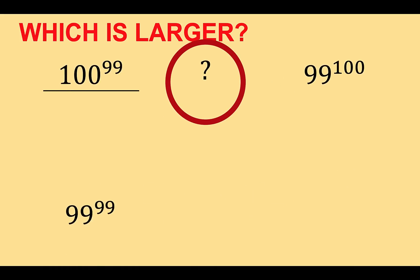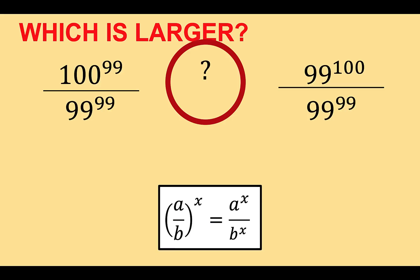Let's divide both sides by 99 raised to 99. The reason why we chose this constant is obvious when we look at some properties of exponents. So let's recall this property of exponent.